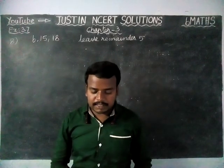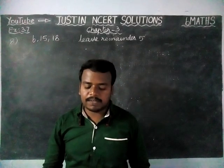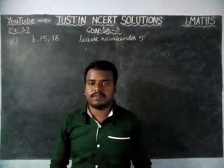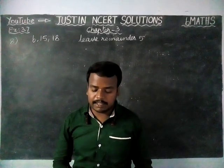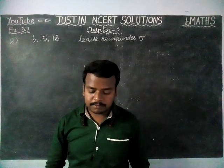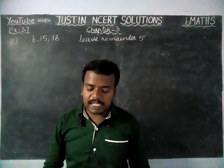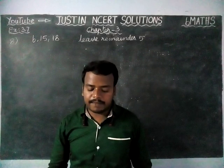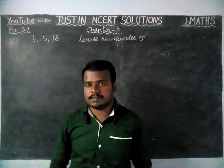The question is: find the least number which when divided by 6, 15, and 18, leaves remainder 5 in each case.